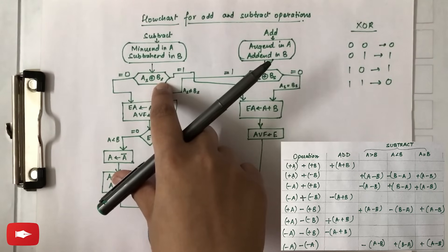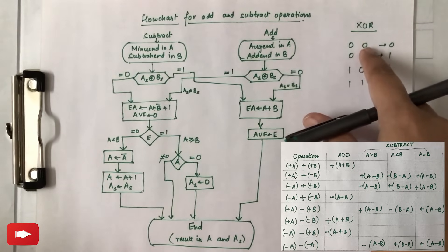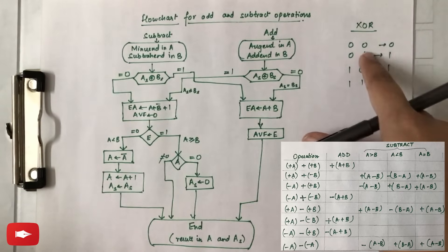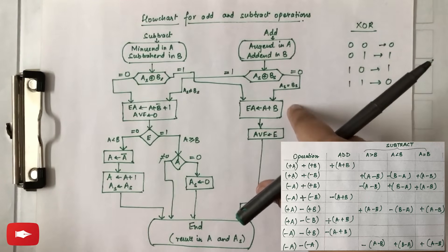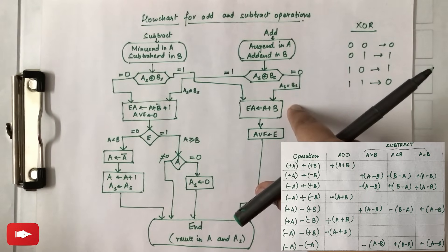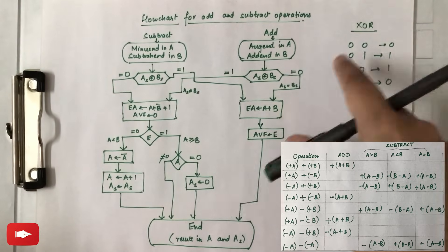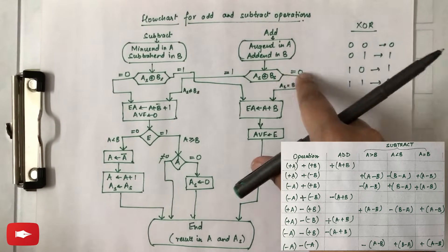We are performing XOR, and the result of the XOR gate is given here: if the sign of the two numbers is the same, the result of the XOR gate will be zero; otherwise it will be one. From the previous video, for the addition operation, when the sign of the two numbers were the same — that is the first and fourth case — addition was performed.